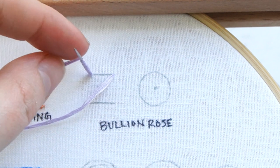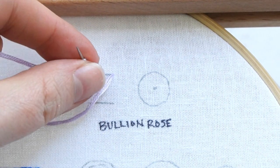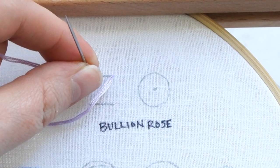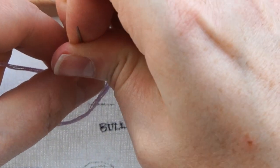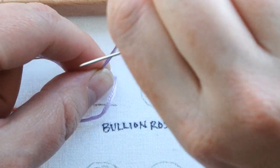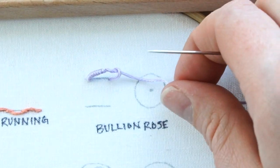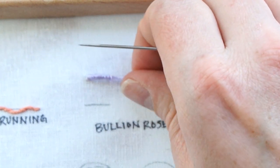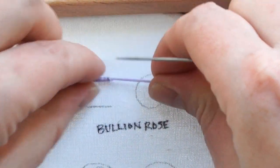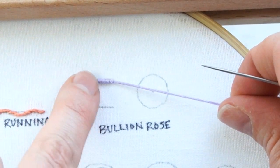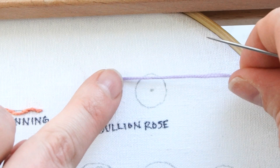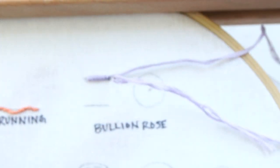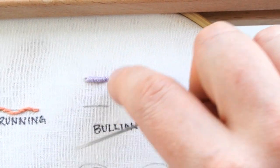With your pointer finger and thumb, hold those wrappings loosely, push your needle up through the back as far as you can, then pull the needle through the wrapping. Keep pulling and use your other finger to straighten it out. Then take your needle and go back down in the hole on the right to secure it.